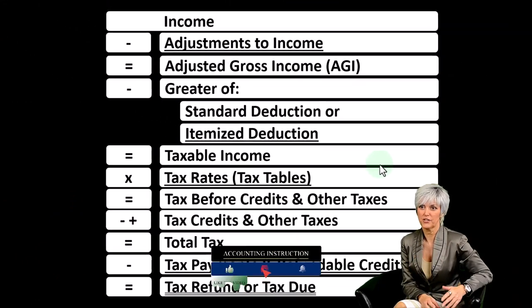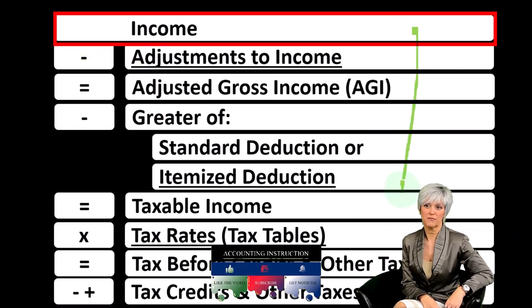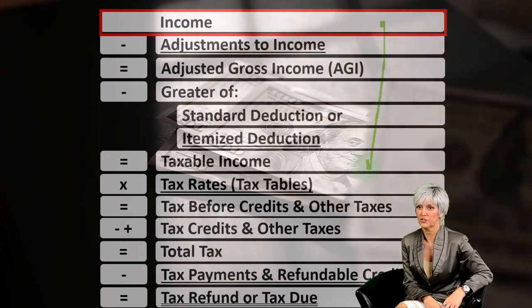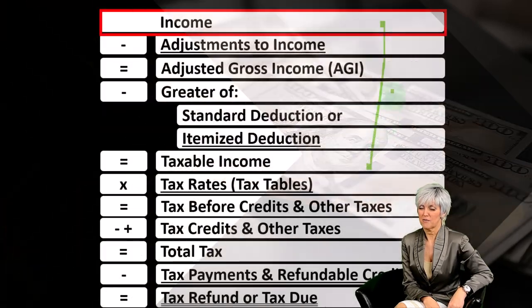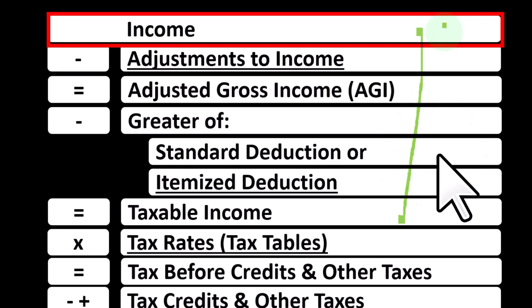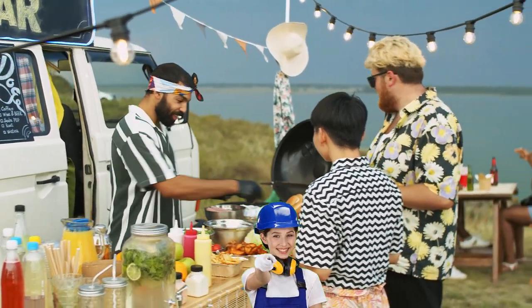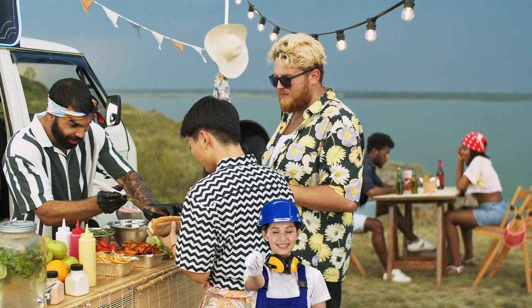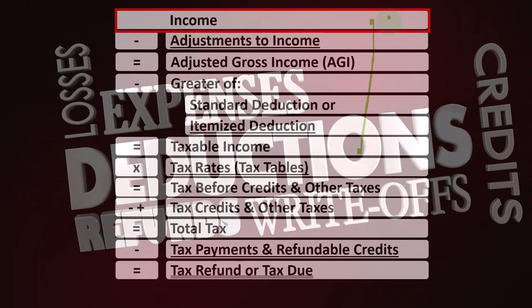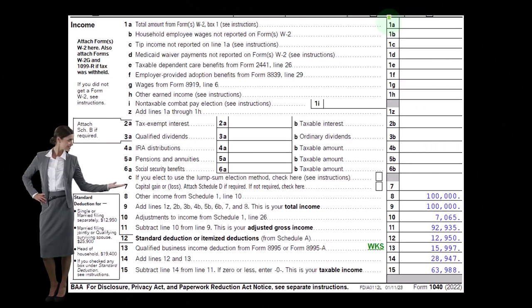Looking at the income tax formula, we're focused on line one, that being income. The first half of the income tax formula is in essence an income statement, but just an outline, just a scaffolding, meaning other forms and schedules will be feeding into these line items. We're focused on the income line and the Schedule C, the form used for sole proprietors and small businesses, which is in essence another income statement, having business income minus business expenses, otherwise known as business deductions, that will get down to net income from the business.